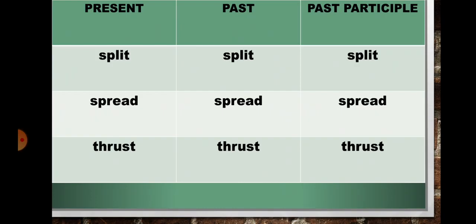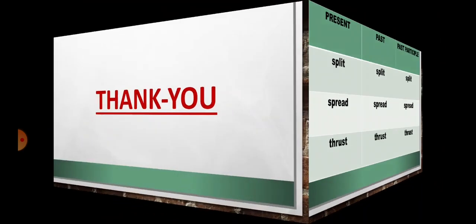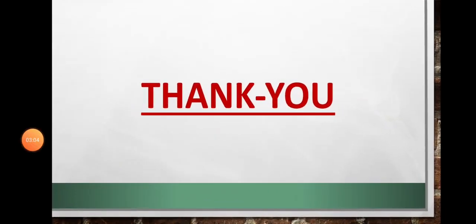In present if it is 'thrust', so in past also it will be 'thrust', and in past participle form also it will be 'thrust'. Hope students, you have understood the list of weak verbs. Thank you.